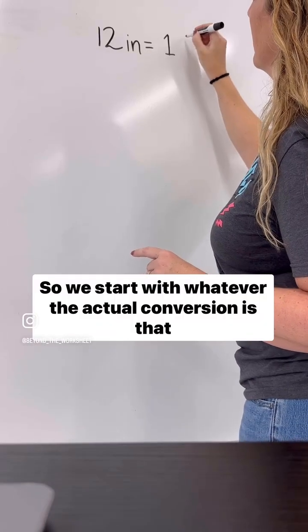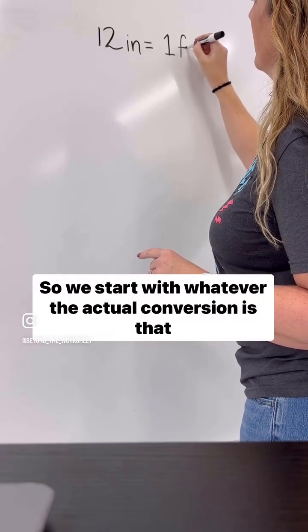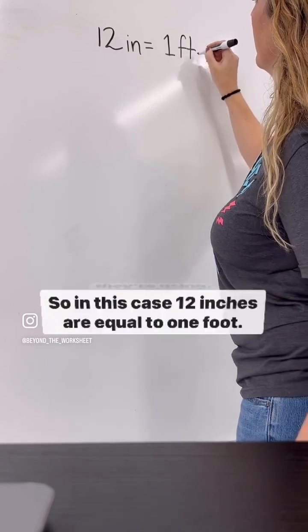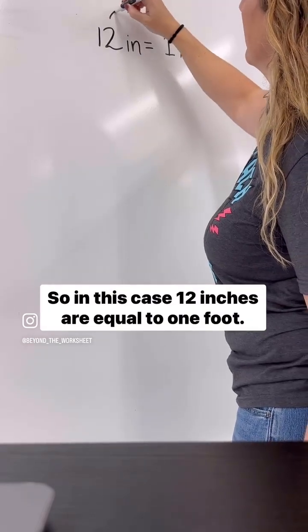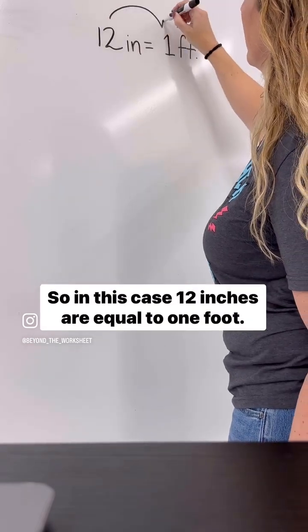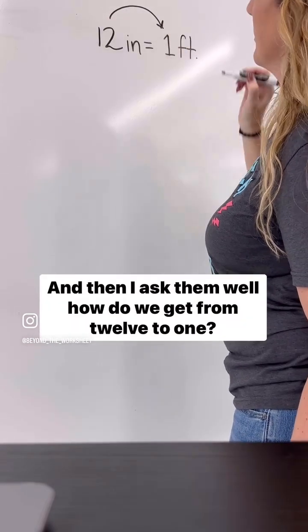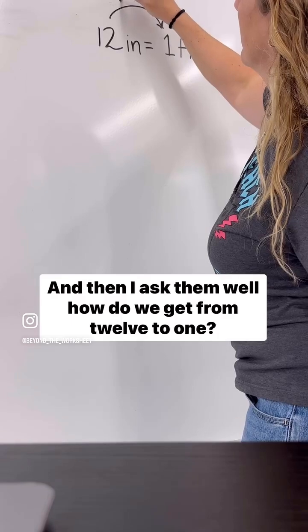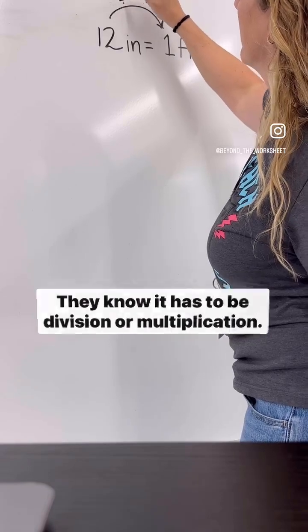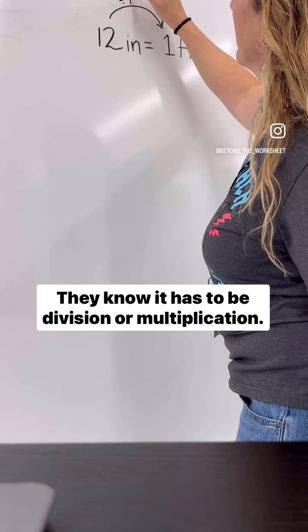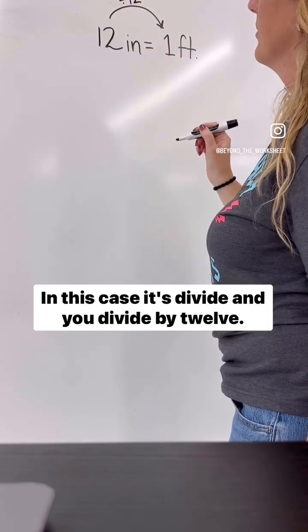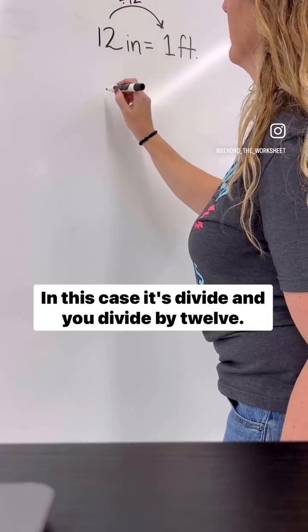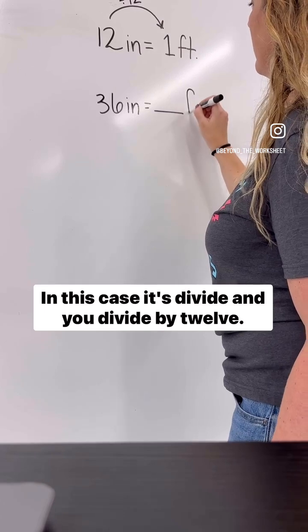We start with whatever the actual conversion is that they're using. So in this case, 12 inches are equal to 1 foot. Then I ask them, how do we get from 12 to 1? They know it has to be division or multiplication. In this case, it's divide — and you divide by 12.